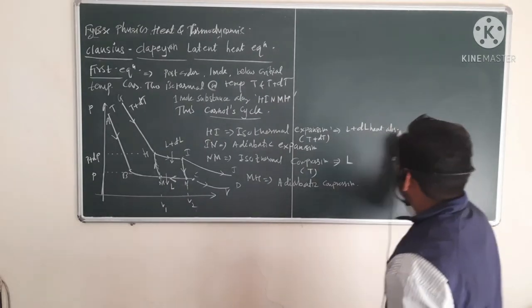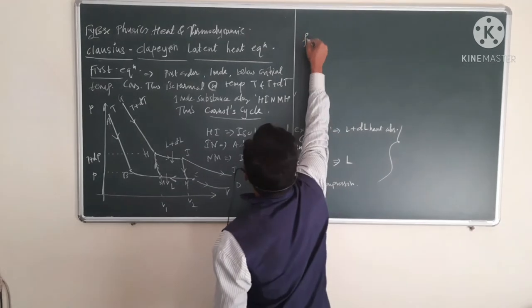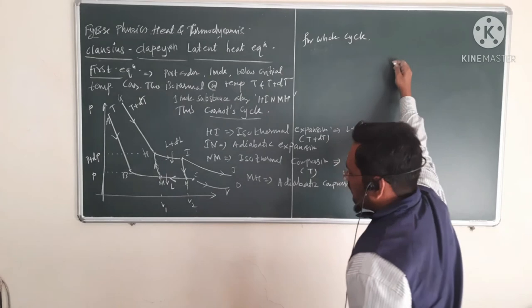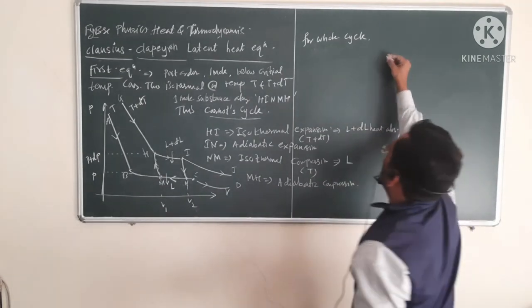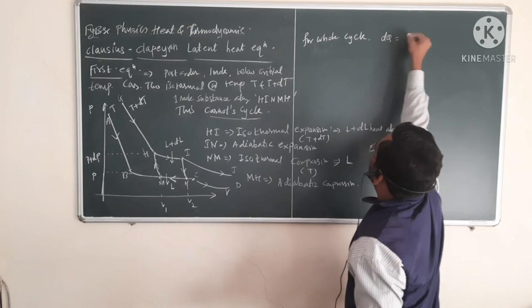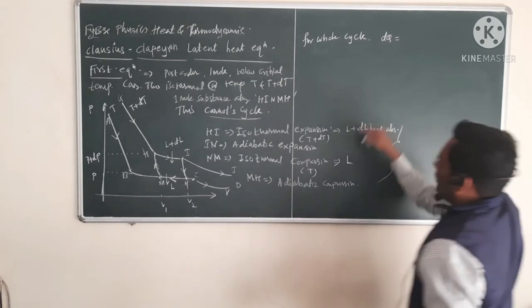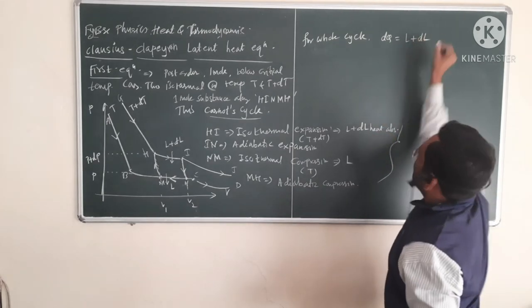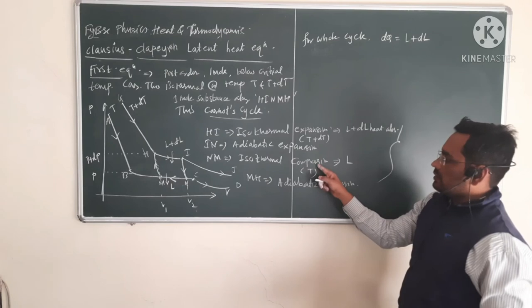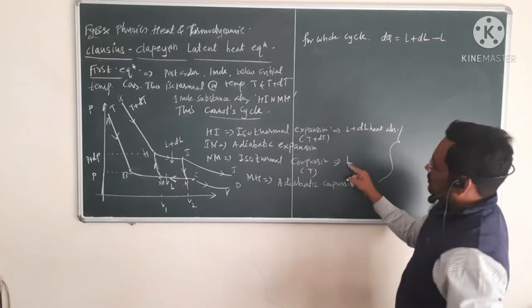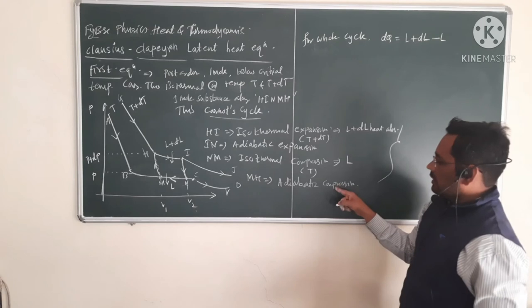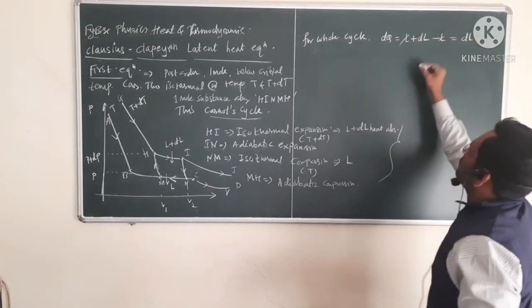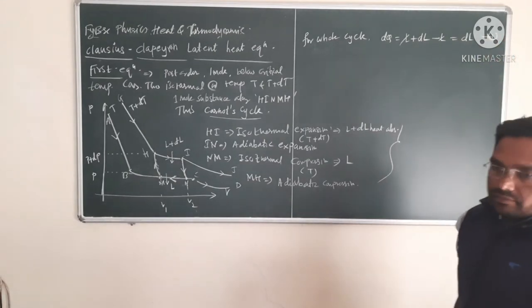For the whole cycle, the net amount of heat energy absorbed by the system: (L+dL) absorbed minus L rejected gives dQ = dL as the first equation.